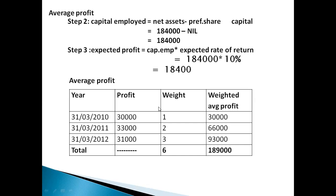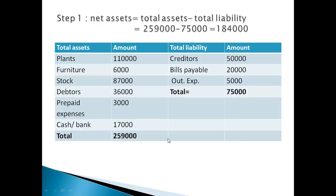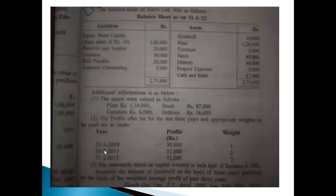Step 4: profit after tax for 3 years from additional information: 2010 — 31,000, 2011 — 30,000, 2012 — 33,000. Weights assigned are 1, 2, 3 for years 2010, 2011, 2012 respectively. Weighted profits: 31,000×1, 30,000×2, 33,000×3. Total weighted profit and total weight 1+2+3 equals 6.